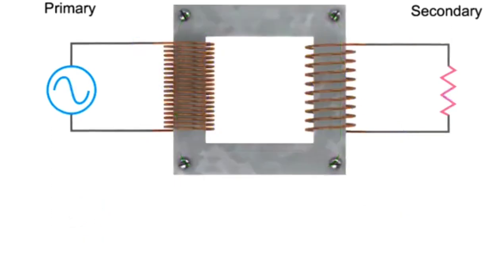If there are fewer coil turns on the secondary than on the primary, this is called a step down transformer. The resulting voltage in the secondary circuit will be less than the primary.